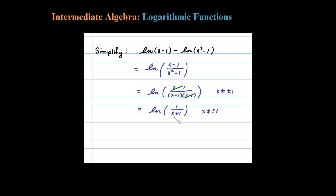Because it may not be very clear that positive 1 is a restriction at this point. So what we're saying is the original is equivalent to the simplified form as long as you keep in mind X is not allowed to be 1.